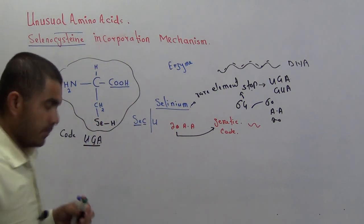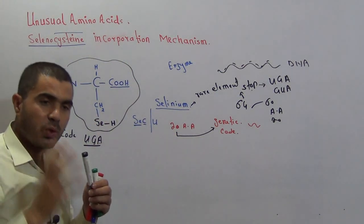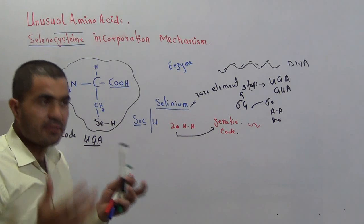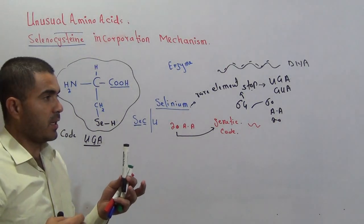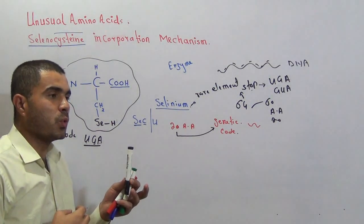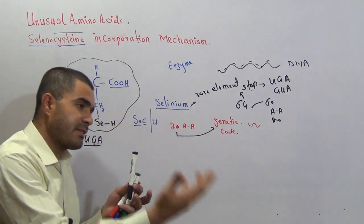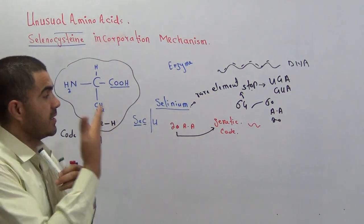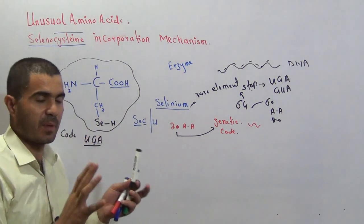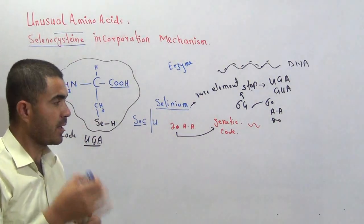Now, how does UGA identify whether it is going to give the signal of stop or code for the selenocysteine amino acid? This is very special — this is the mechanism. Now let's come to the mechanism.